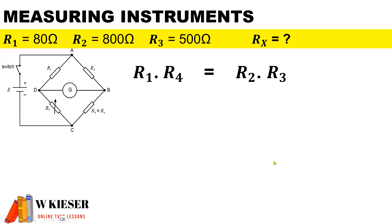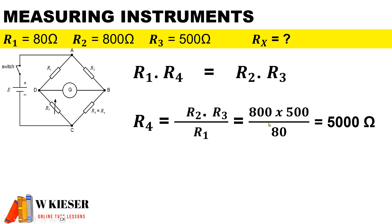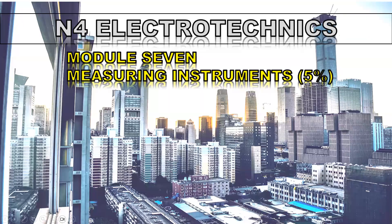To calculate RX, we utilize the formula R1 times R4 equals R2 times R3. If we manipulate this equation to get R4 on its own, it is R2 multiplied by R3 divided by R1, and that gives us 5000 ohms for R4. Thank you for watching this video on measuring instruments.